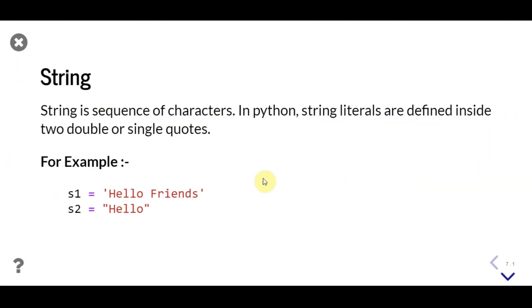In Python, a string is a sequence of characters. String literals are defined inside double quotes. In the example below, we create two strings: the first using single quotes and another with double quotes, then store them in variables s1 and s2.